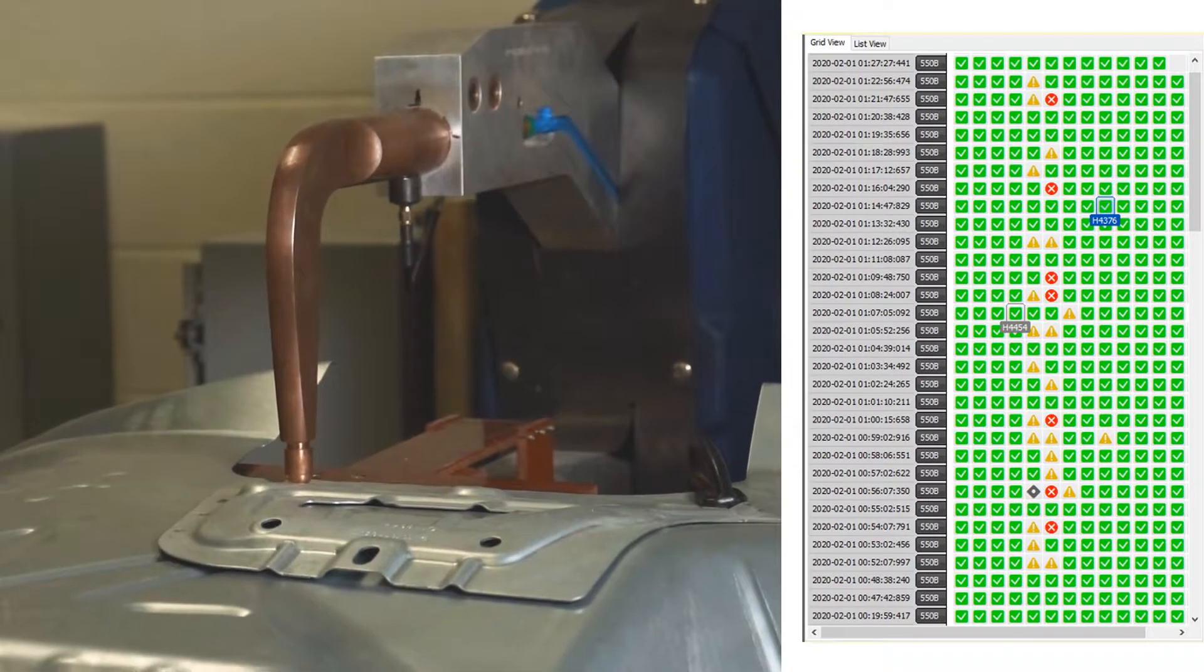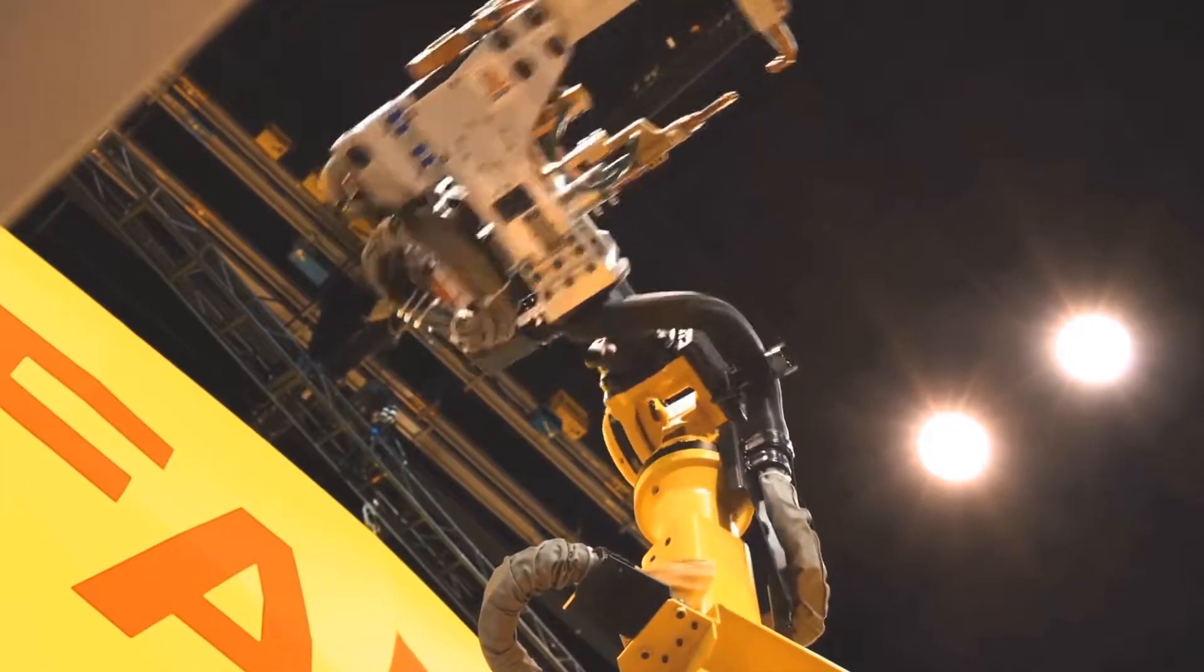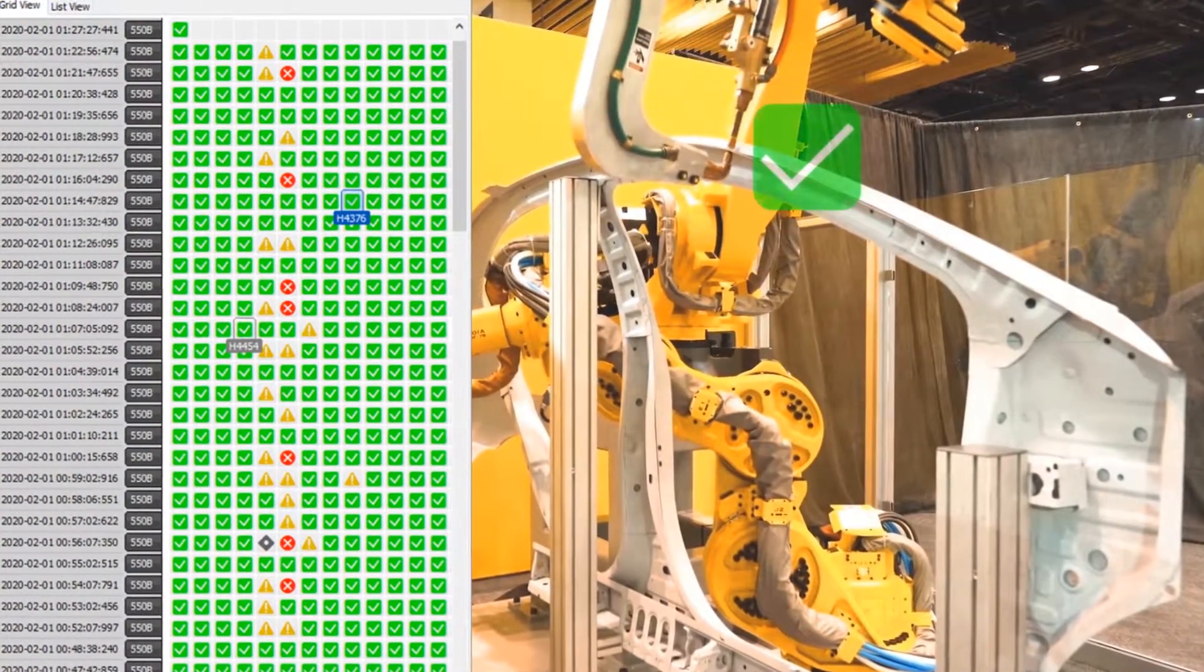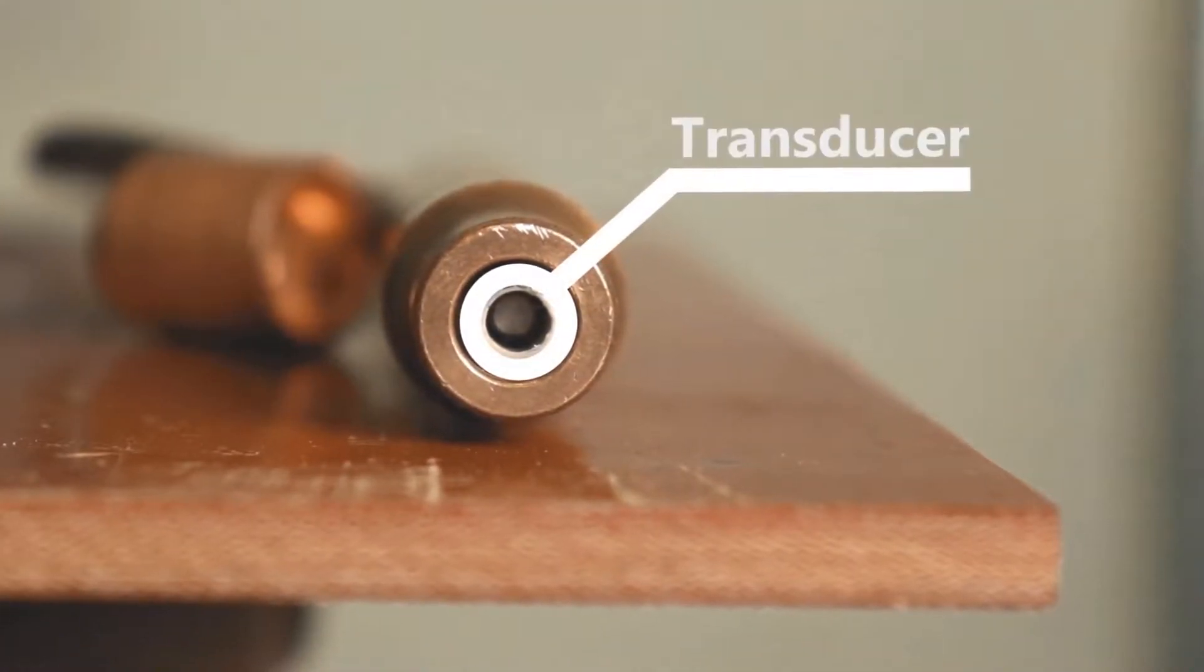This allows quality control of 100% of welds produced by a welding gun equipped with Rewa. The Rewa system is comprised of four main parts.